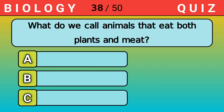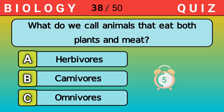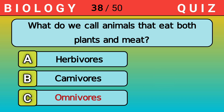What do we call animals that eat both plants and meat? Answer C. Omnivores.